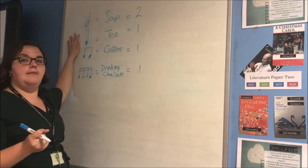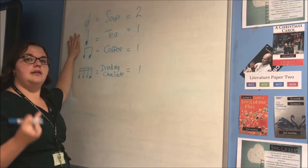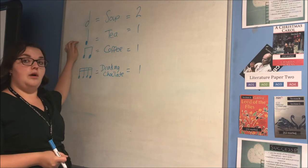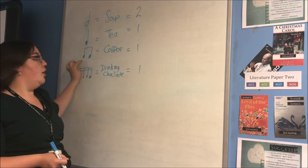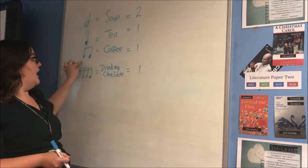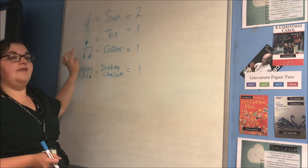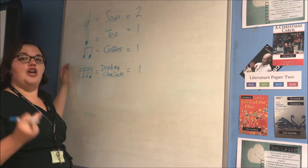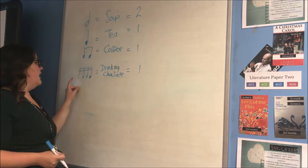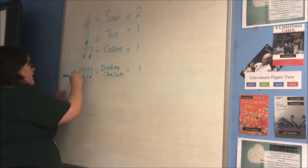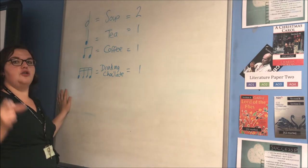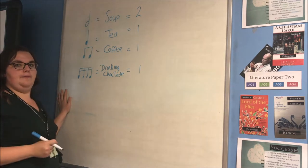I have got tea, which lasts for one beat. I have got coffee, so a half plus a half is one in total. And then I've got drinking chocolate, which is four times a quarter, which equals one, so it's drinking chocolate.